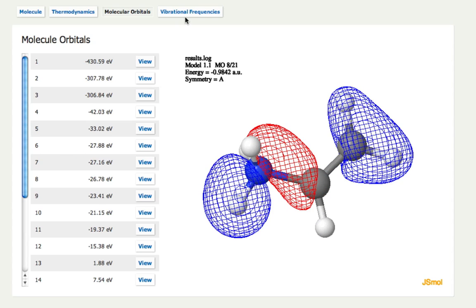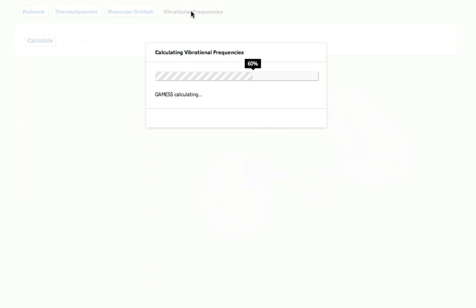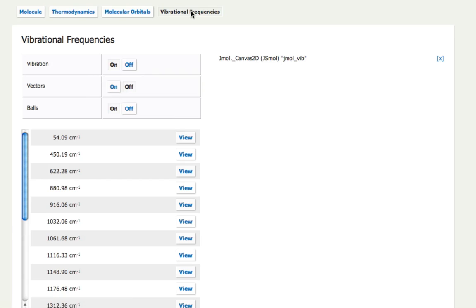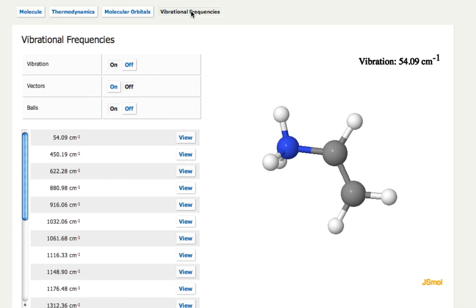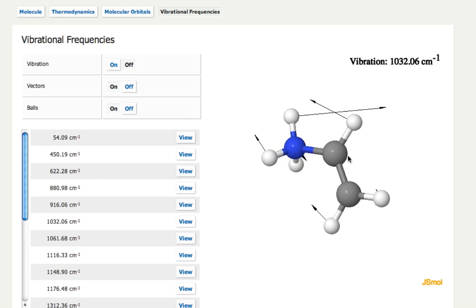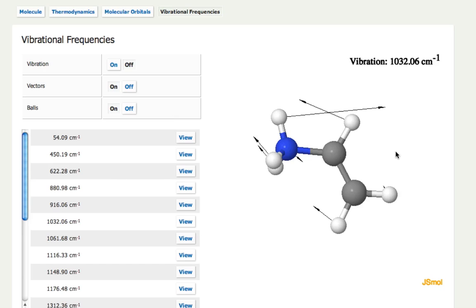I can also calculate vibrational frequencies. These are also ranked by vibrational frequencies or vibrational wave numbers here. So this is the lowest one, and I can then select other vibrations here. I can turn that off and add vectors, for example, if I think that's a better way of doing things.